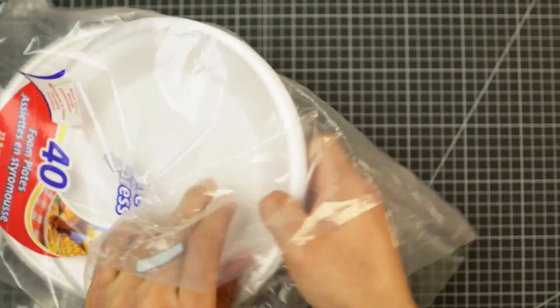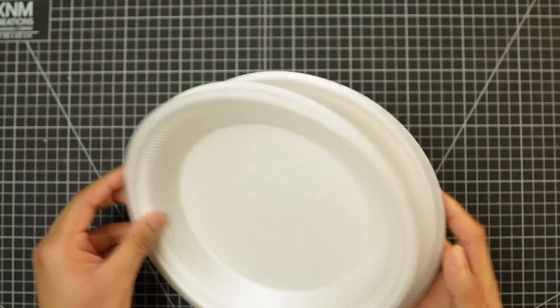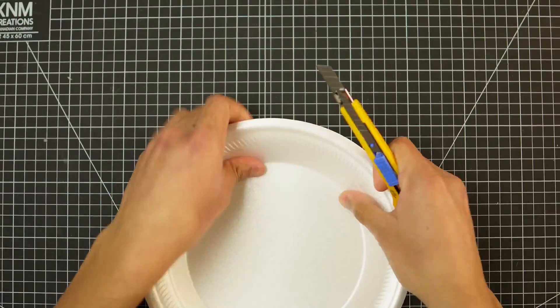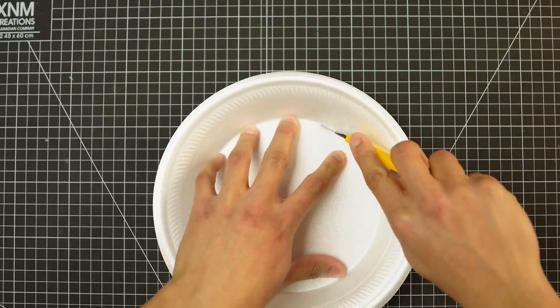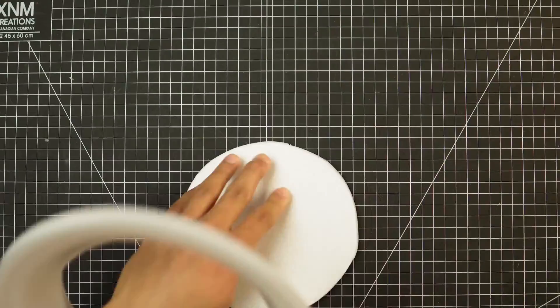We are going to be using some styrofoam plates. These are the basic styrofoam plates that you get from your dollar store and I'm just going to use my exacto knife to cut out the rim out of that.